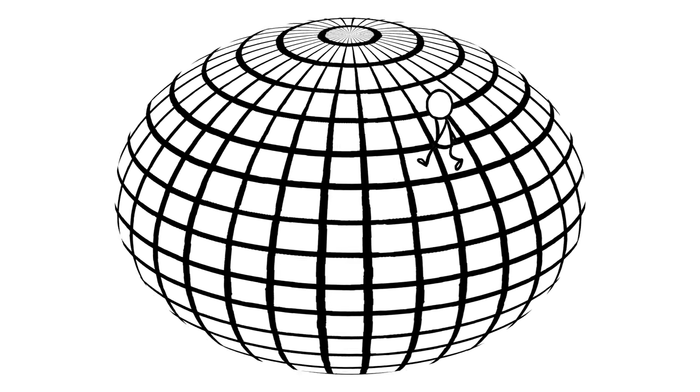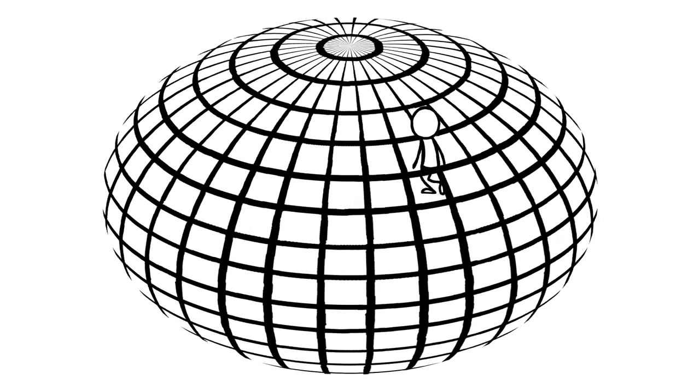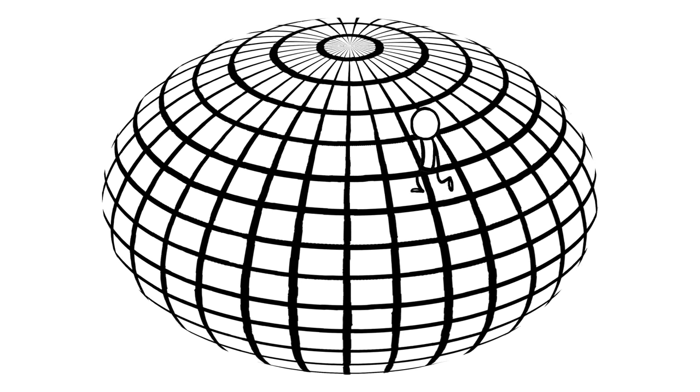But what about space as a whole? If space is positively curved everywhere, then there's only one shape space can be: a giant hyperspace potato. If you went in one direction for long enough, eventually you'd end up in the same place you started.